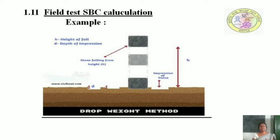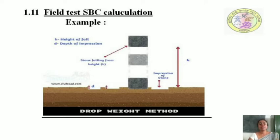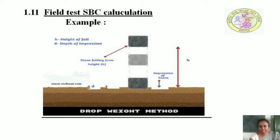In this session we will concentrate mainly on the dropping weight method, which gives an approximate value of the soil bearing capacity. This is a simple field test. Looking at the diagram, you can see a cube being dropped from a certain height, and the impression created in the soil is observed.